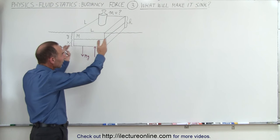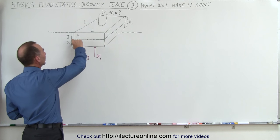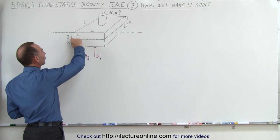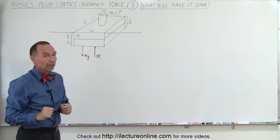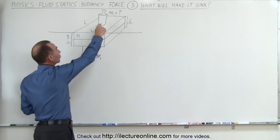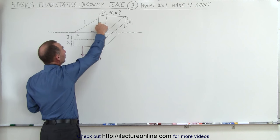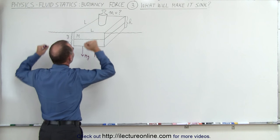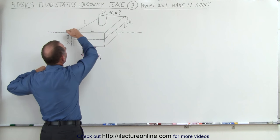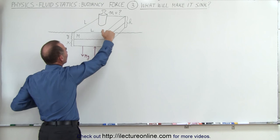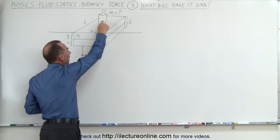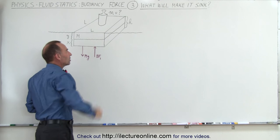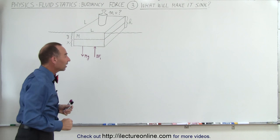Let's assume that the liquid is water, and that x is the distance below the surface and y is the distance above the surface. Now we place an extra object on top in order to drive it further down into the liquid, so that the liquid is now even with the very top of the object. Any additional mass beyond that will simply make the object sink.